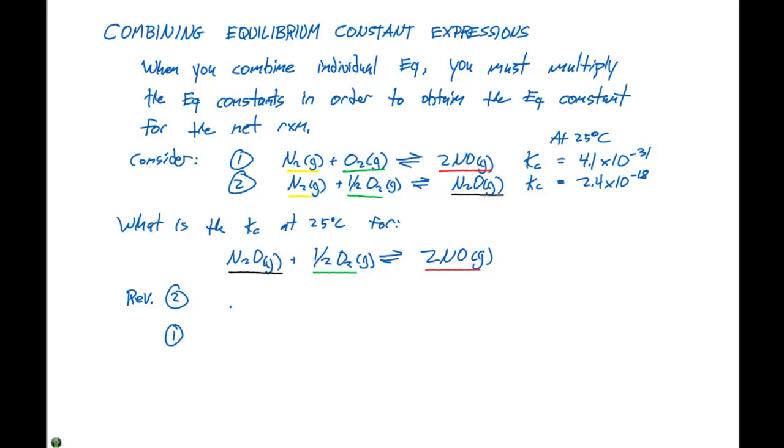If we reverse reaction number two, that gives us N2O gas in equilibrium with N2 gas plus a half O2 gas. The Kc for this expression is 1 over 2.4 times 10 to the minus 18, because when we reverse a reaction, we need to do the reciprocal.